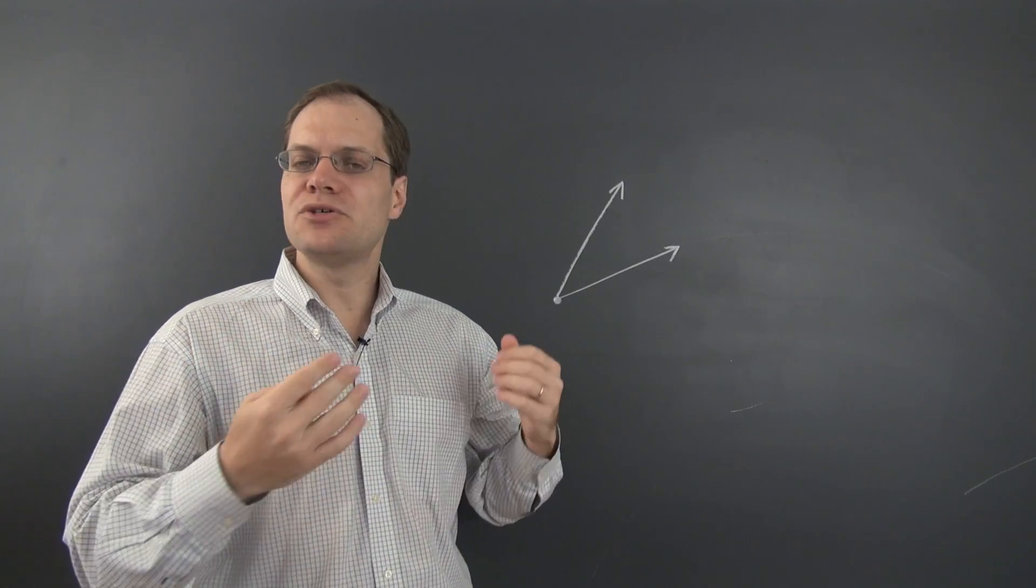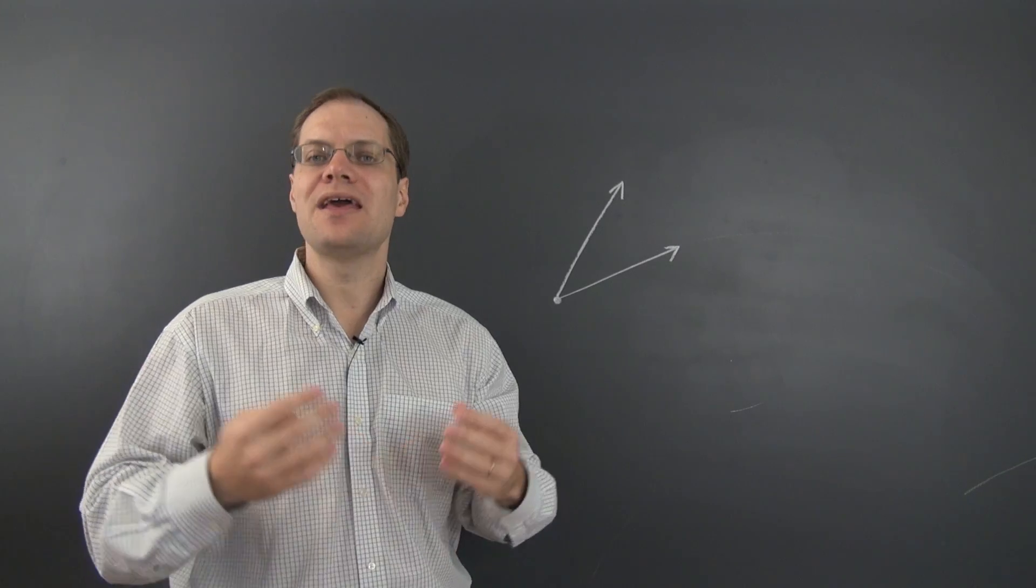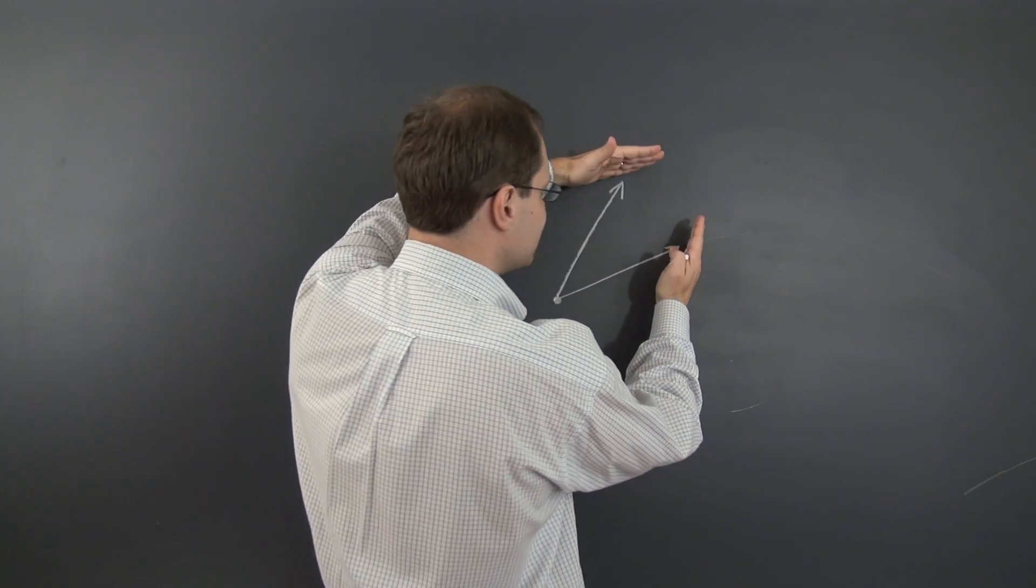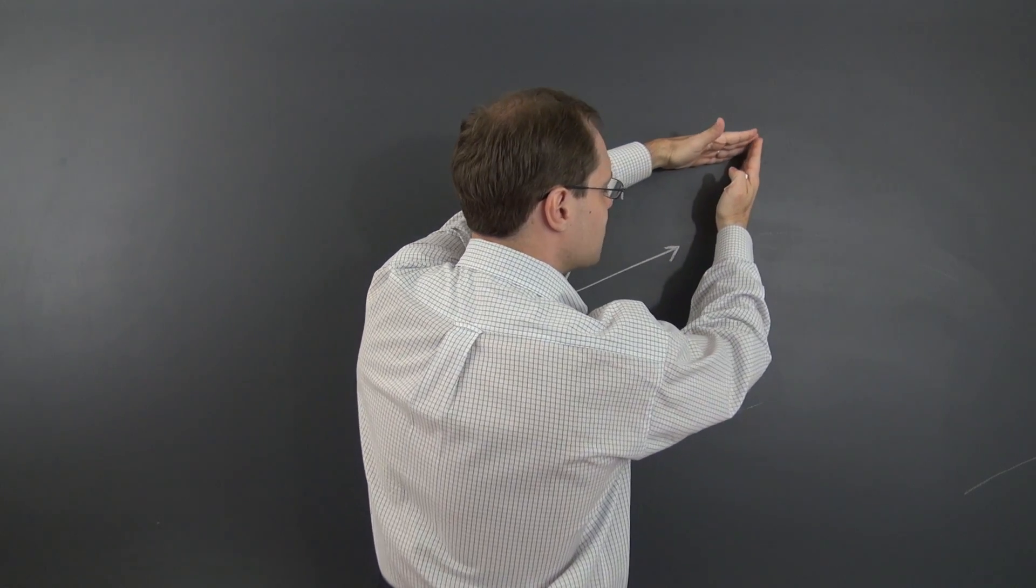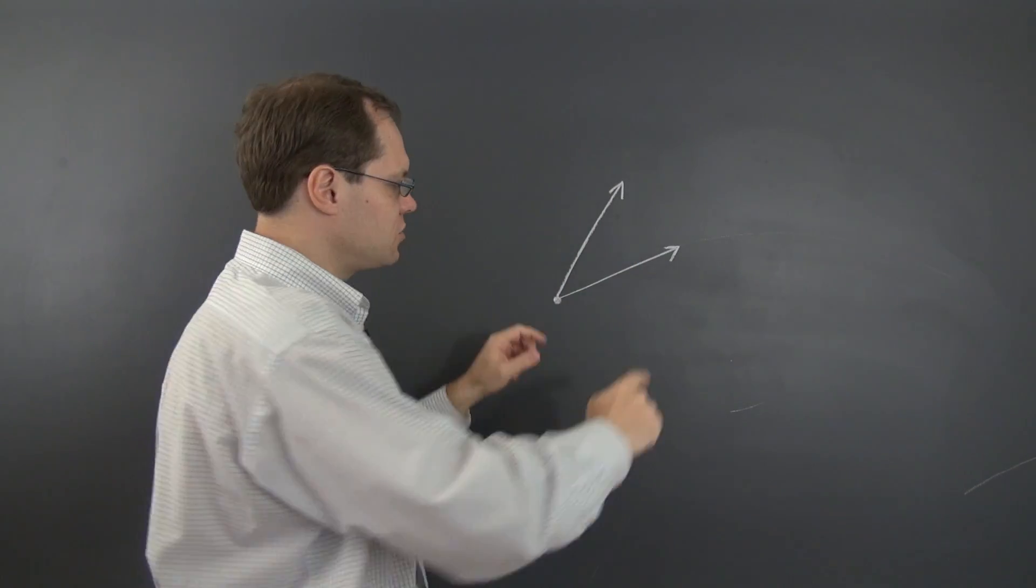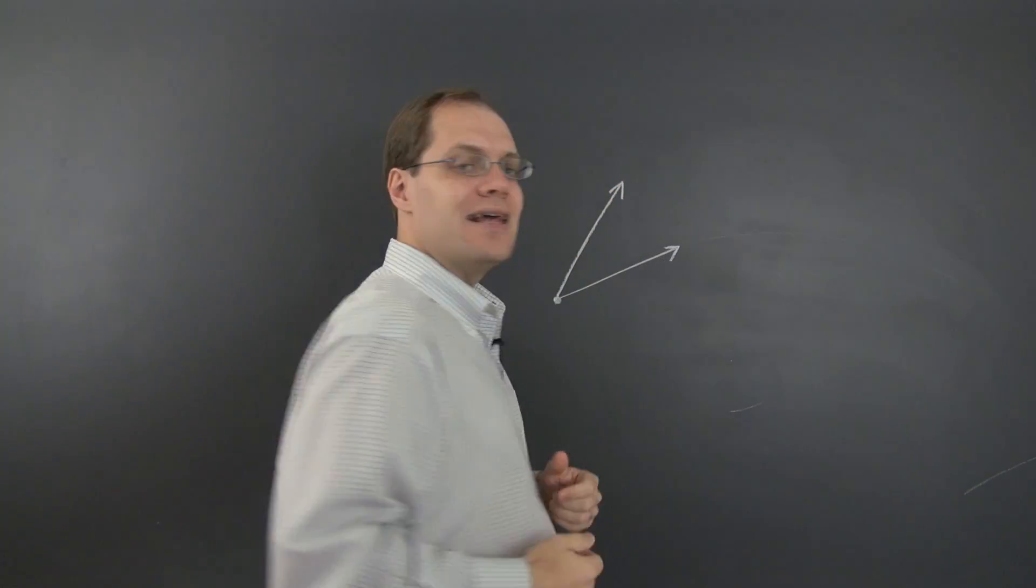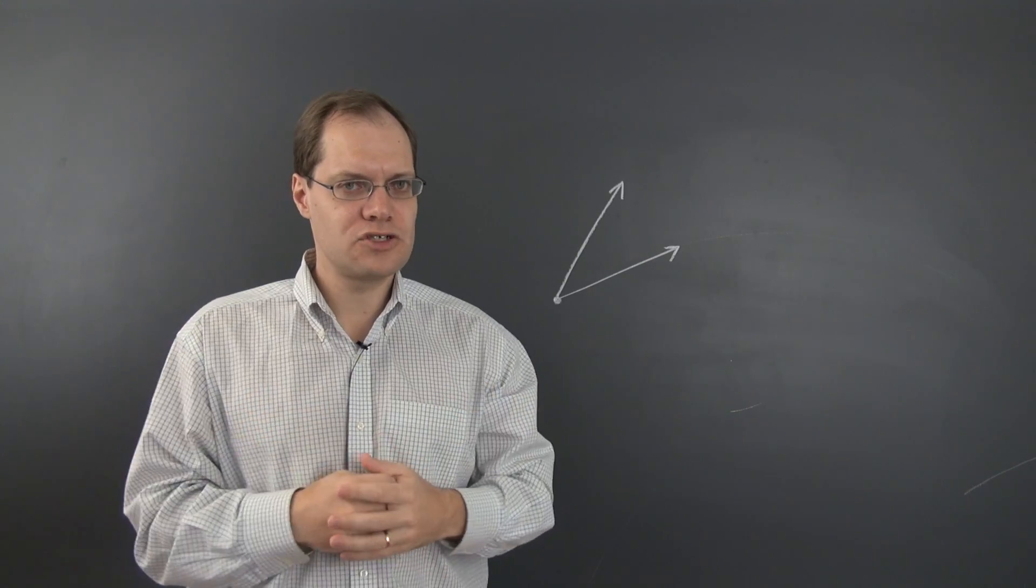Now compare that to adding these two vectors. If I had to add these two vectors, I would either have to draw two lines parallel to the vectors and see where those lines intersect, or I would have to move one of the vectors to the tip of the other. In either case, there is more work to be done.